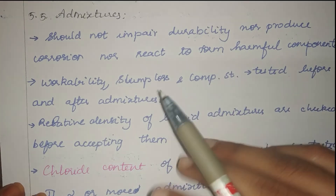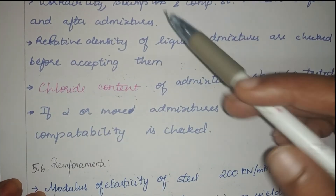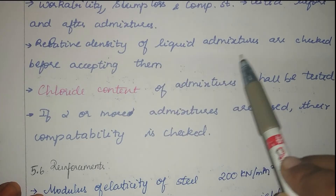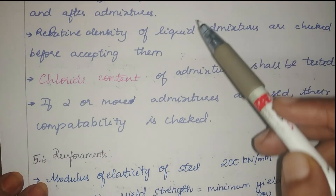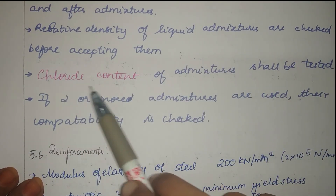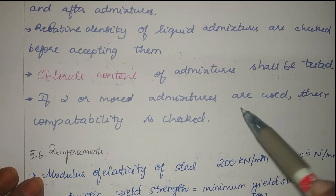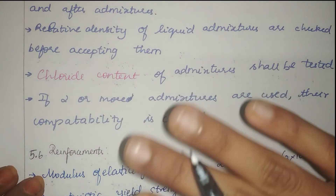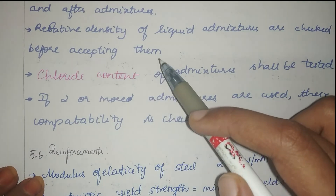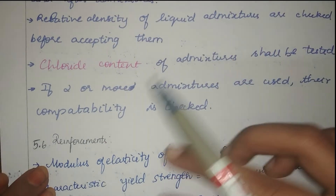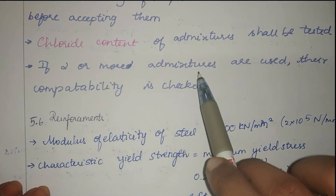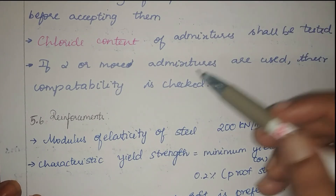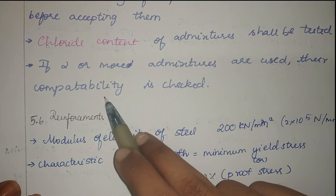Before-and-after tests determine the percentage change when admixtures are used. Chemical admixtures are mostly in liquid form, so the relative density of liquid admixtures is checked before accepting them. The main test is checking for chloride content, which is a critical factor for concrete durability and is responsible for corrosion. If two or more admixtures are used together — such as an accelerator and super plasticizer — they must be verified to be compatible with each other.